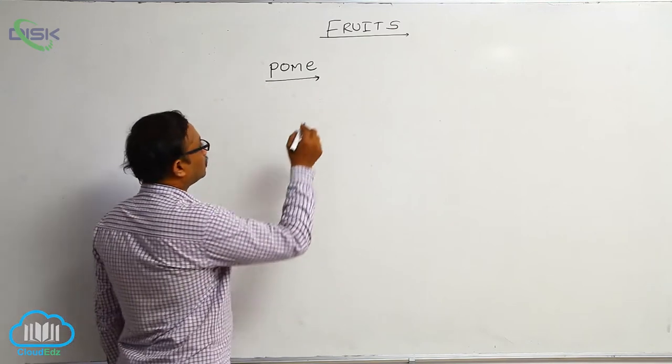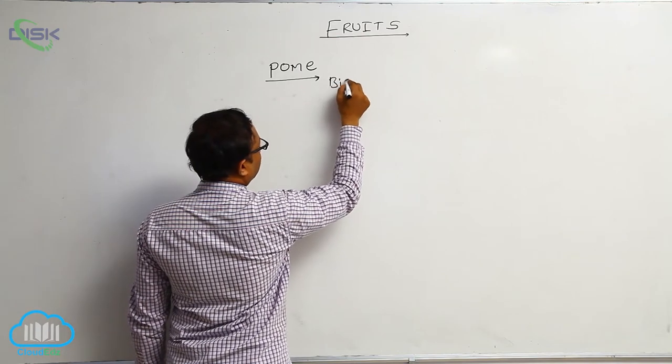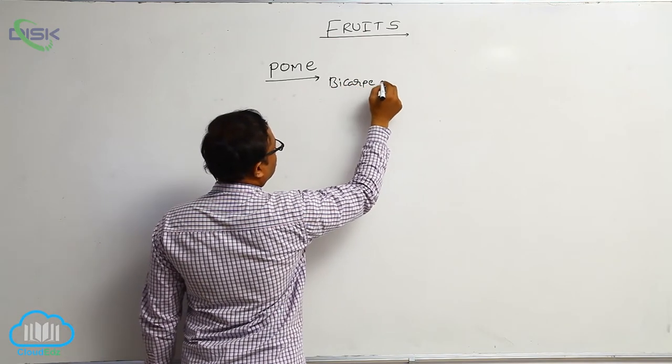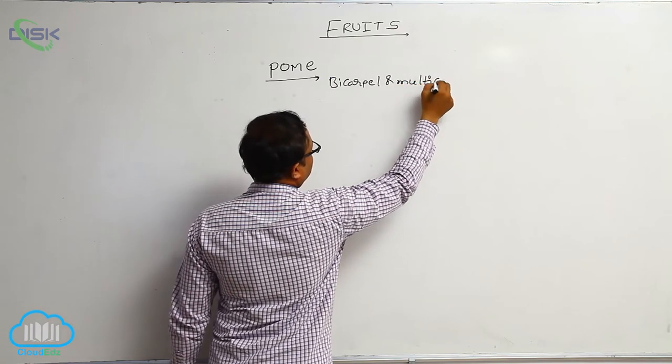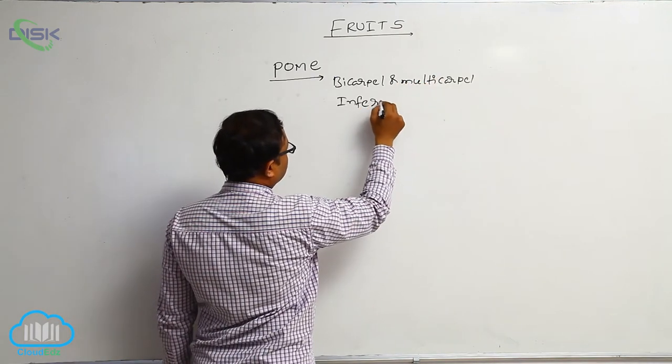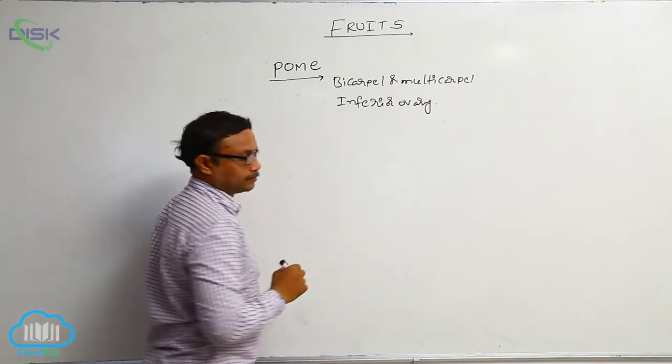Pome. So, the fruit formed from bicarpel or multicarpel inferior ovary is known as the pome.